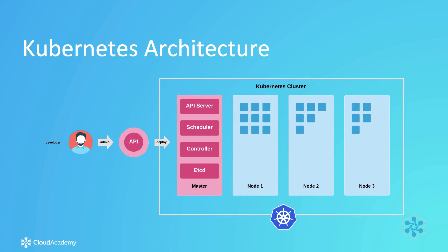A Kubernetes cluster, as most of you will already know, consists of a control plane and one or many worker nodes. The control plane, sometimes referred to as the Kubernetes master, consists of a number of internal components that are used to manage, schedule and orchestrate workloads across the worker nodes. AKS creates and manages the control plane for you, consisting of one or several VMs spread over multiple zones to ensure that it remains highly available.